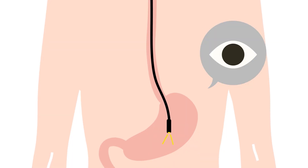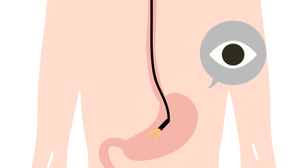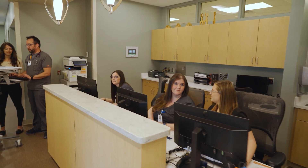Endoscopy is a procedure that uses a flexible lighted tube to examine internal organs and tissues. It can help identify abnormal growths and take biopsy samples from hard-to-reach areas.